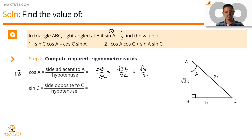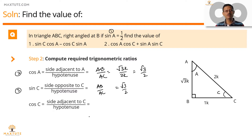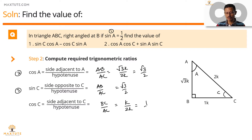Now let's compute sin C. Sin C equals the ratio between the side opposite to angle C and the hypotenuse. The side opposite to angle C is AB, and the hypotenuse is AC. So AB by AC equals root 3 by 2. Lastly, cos C equals the side adjacent to angle C divided by the hypotenuse, which is BC divided by AC. BC measures K and AC is 2K, so cos C equals 1 by 2.